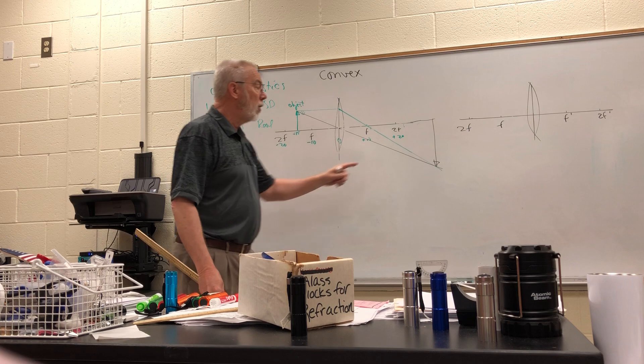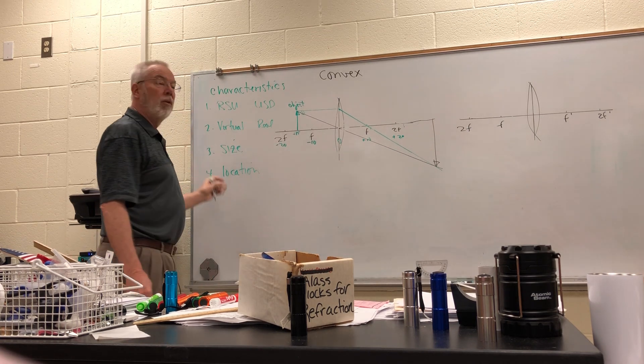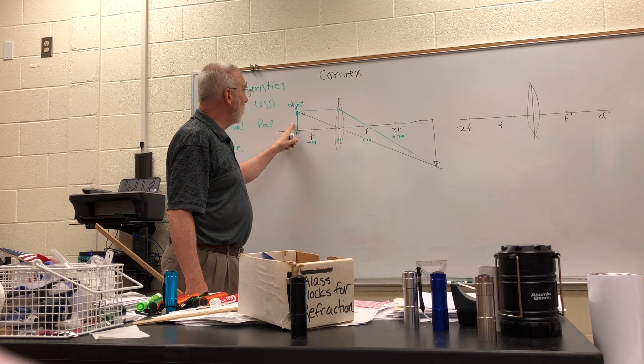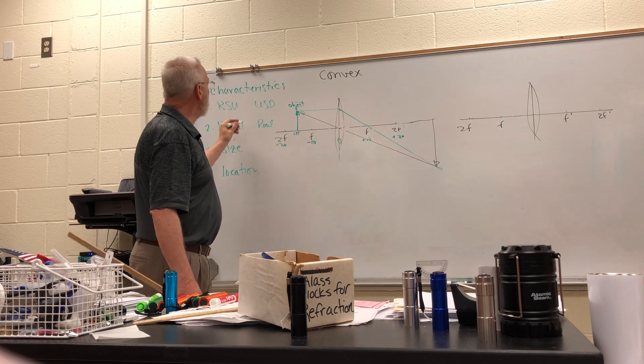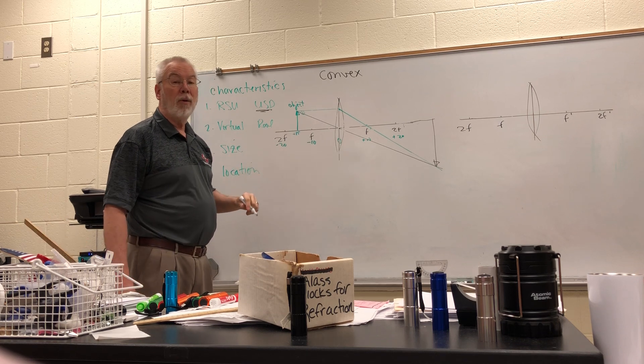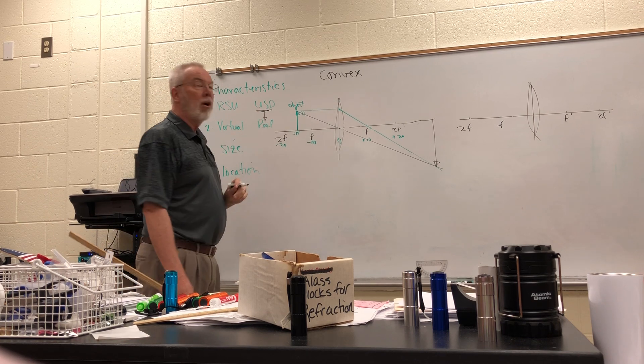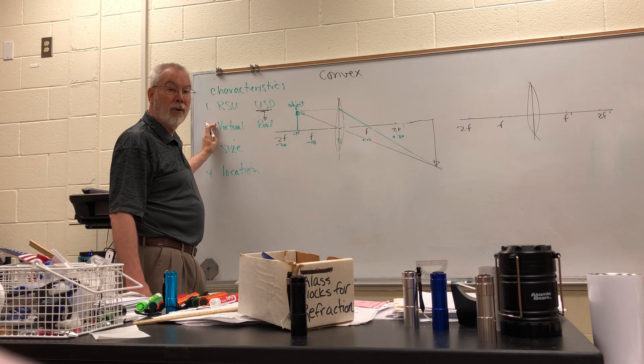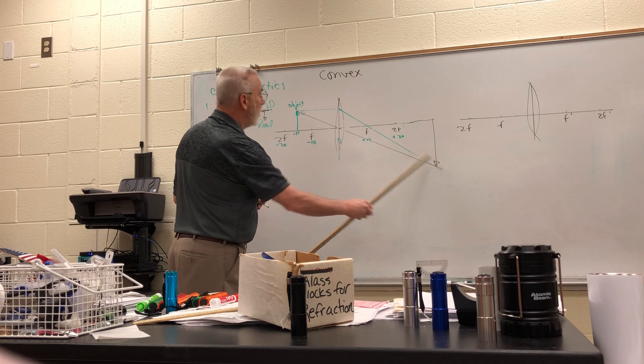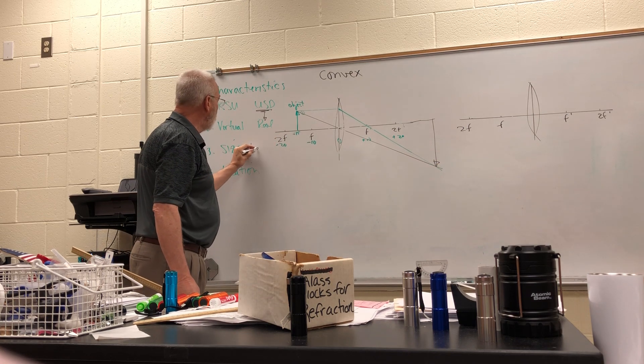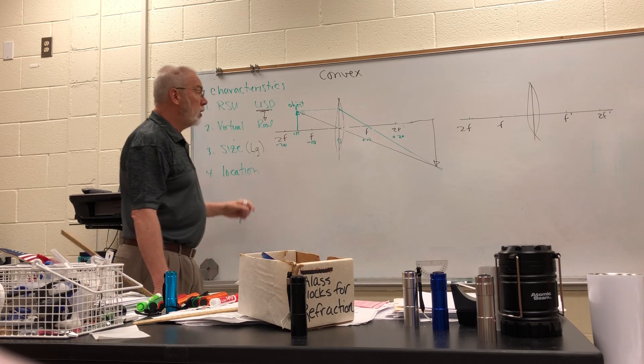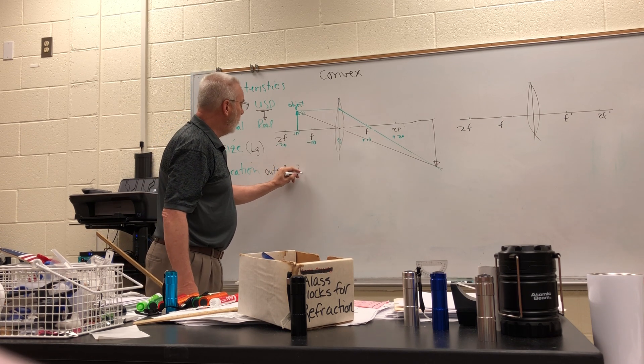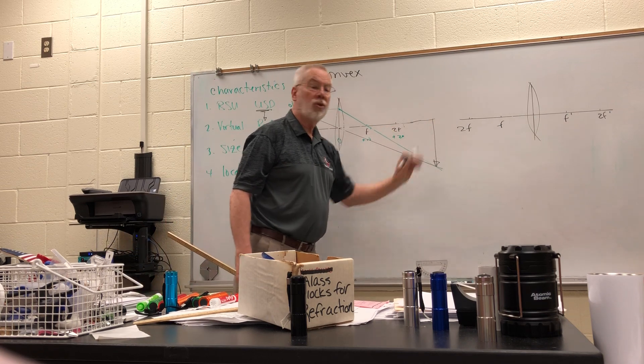Now, once we establish where the image is located, then we can start figuring out the characteristics of the image. You can see based on what the object looks like, this one's upside down. And as we talked about with mirrors, if it's upside down, it's automatically real because upside down and real are tied together, just like right side up and virtual are tied together. And then we can see that this arrow is quite a bit longer than the original one. So we would say that this is larger. And then last but not least, you would say that it's located outside of 2f prime.